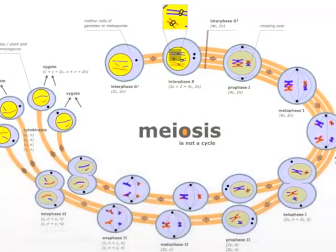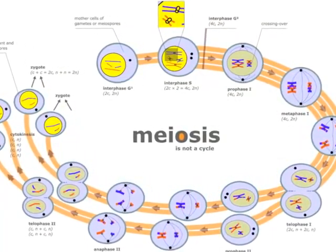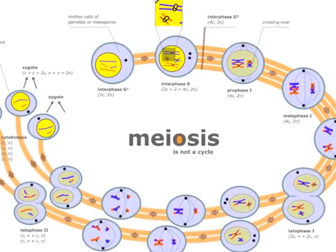Meiosis I is the first phase of meiosis. In this phase, two diploid daughter cells are formed, each containing double chromosomes.